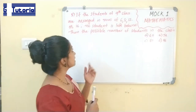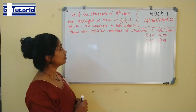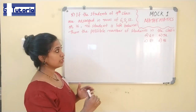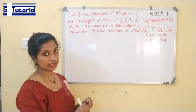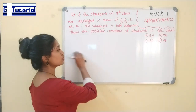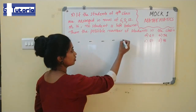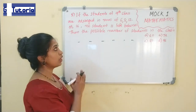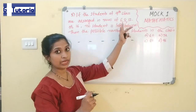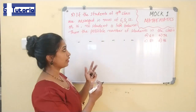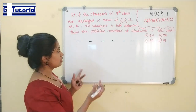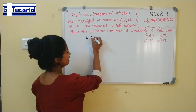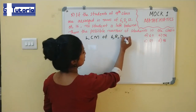Next question: if the students of 9th class are arranged in rows of 6, 8, 12, or 16, no student is left behind. Find the possible number of students in the class. Since students can be arranged perfectly in rows of 6, 8, 12, or 16, we need to find the LCM of these numbers. This is from the LCM and HCM portion. The LCM gives the total number of students.